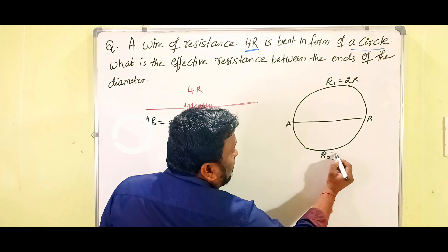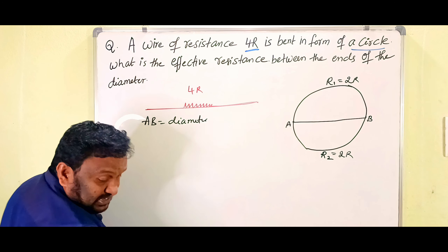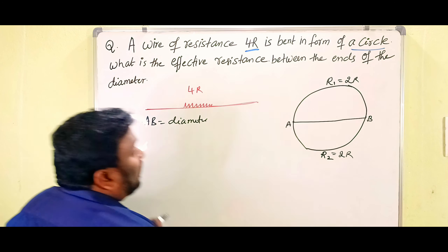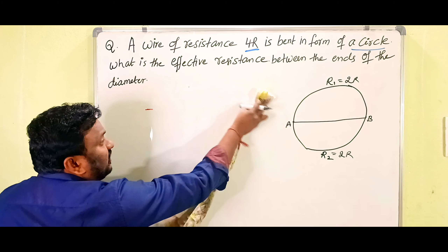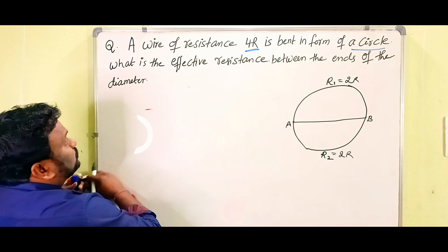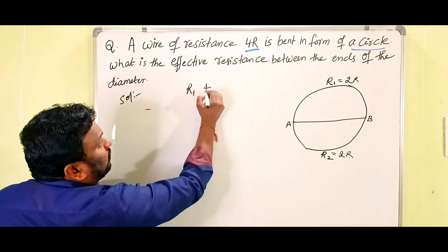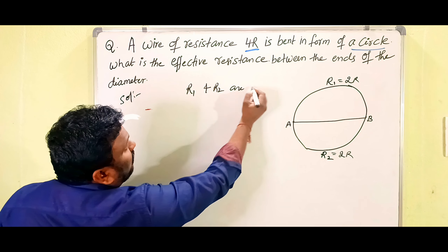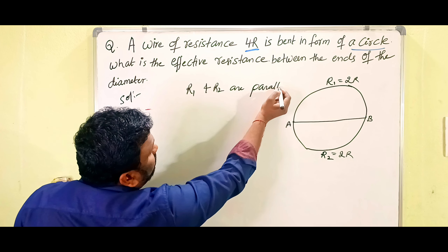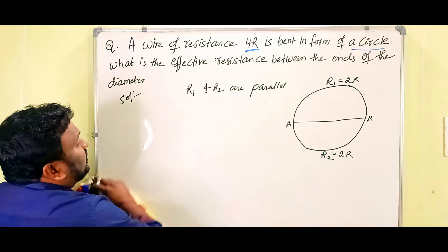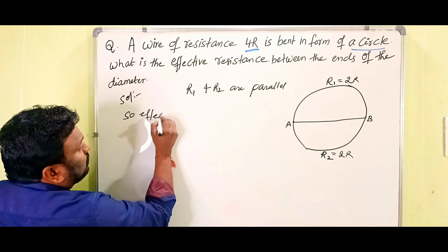The first end of the lower wire and the first end of the upper wire are joined at one side, and the other ends are joined at the other side. Since the entire wire resistance is 4R and it is divided into two equal parts, R1 is 2R and R2 is also 2R. R1 and R2 are in parallel.